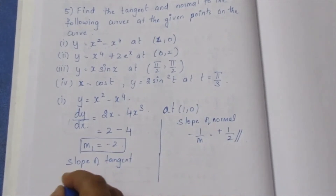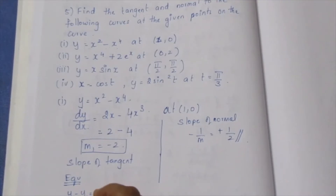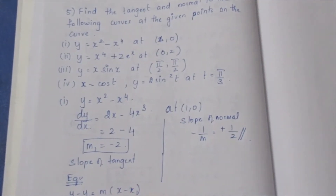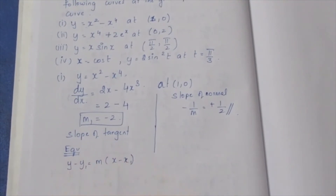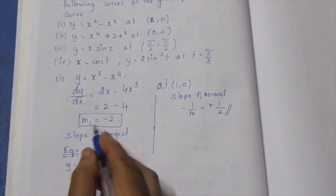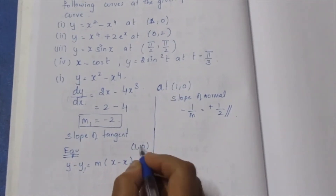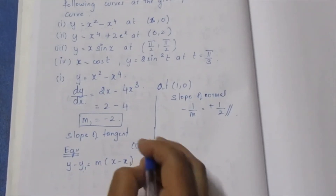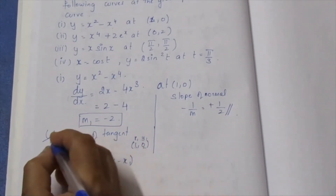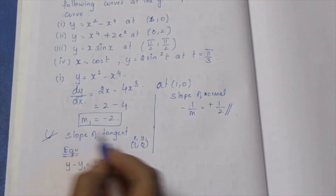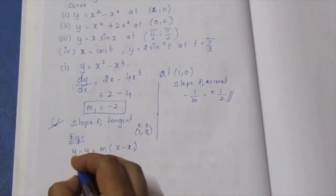Now for the equation of a line: the formula is y minus y1 equals m into x minus x1. This is the formula for the equation of a tangent line. The tangent is not just a slope — it is the equation of a line. We take the point (1, 0) and form the equation of the tangent.